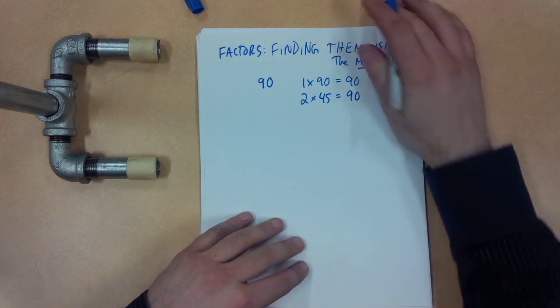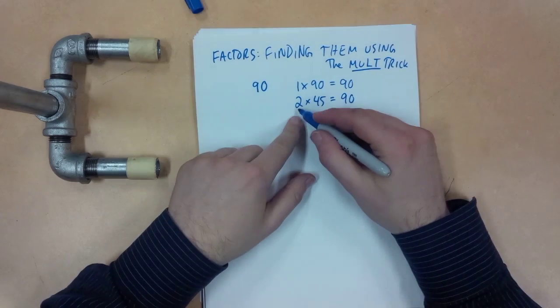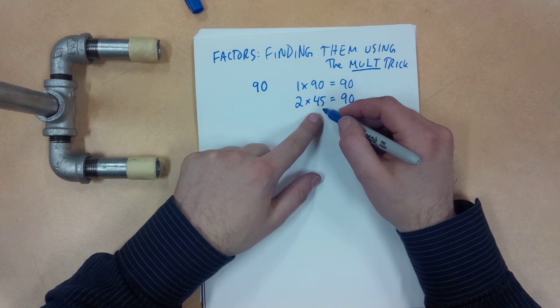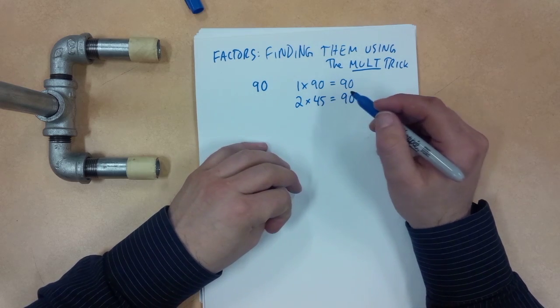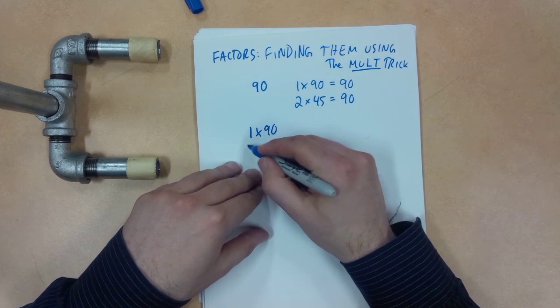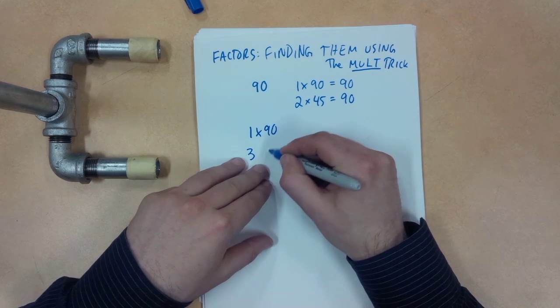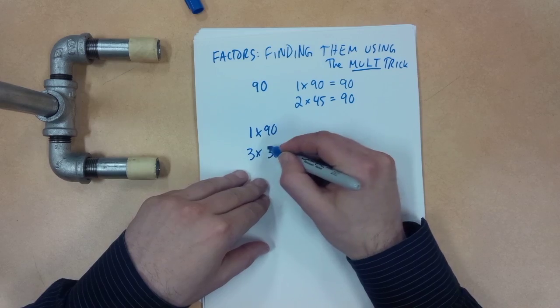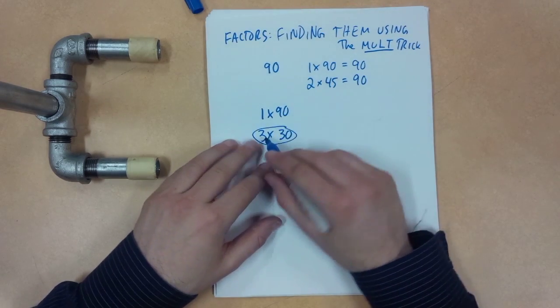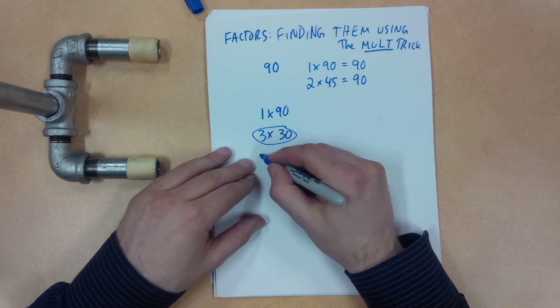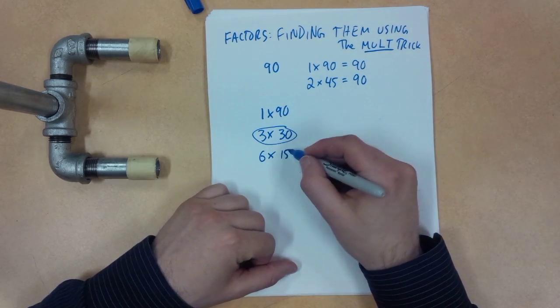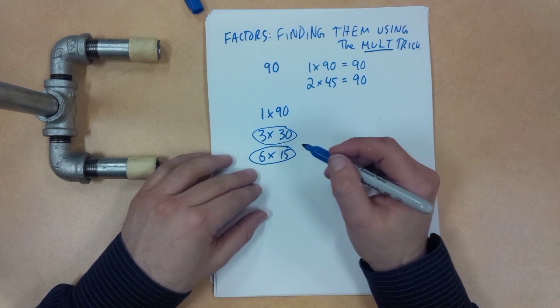I can't double this and cut this one in half because it's odd right now, but I could do other things. I could start with the beginning again. I could actually try tripling this and cutting this one into thirds. So that's also going to be a set of factors. Now from this stage, I can try doubling them. I could go 6 times 15, doubling and halving. Okay, that worked.